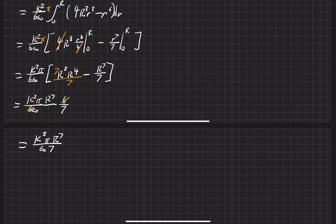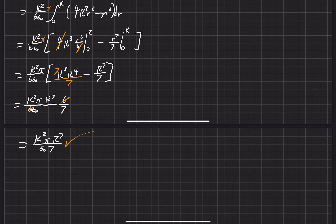And that's the answer — the energy configuration, also known as the energy stored in the system, is K²πR⁷ divided by 7ε₀. This matches what was given in the question as the expected answer. The next step is finding the work the other way and verifying it gives the same result.